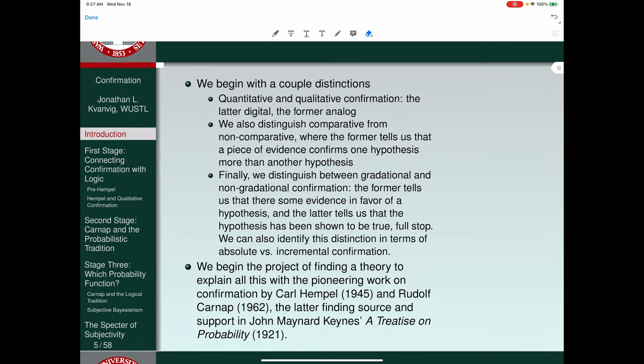Now given those distinctions, we have a number of tasks that any theory of confirmation would need to address. And we can begin the project of finding a theory to explain all of this with the pioneering work of confirmation by Carl Hempel. His most important work is published in 1945, Carnap's in 1962. And the source of all of this traces all the way to John Maynard Keynes 1921 book, A Treatise on Probability. This is the same Keynes by the way who's famous in economic theory for a Keynesian account.